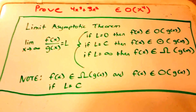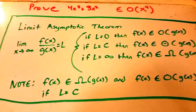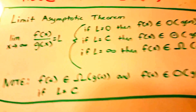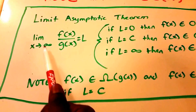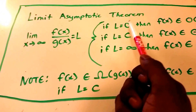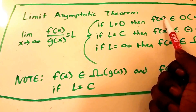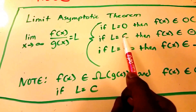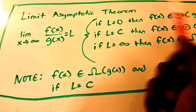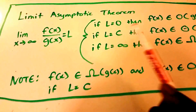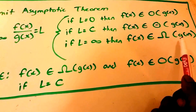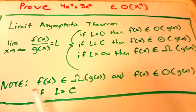Hello YouTube, this is a proof of f(x) belonging to Big O of g(x) using the limit theorem. Here we have the limit as x approaches infinity of f(x) divided by g(x) equals some limit L. If that limit equals 0, then f(x) belongs to Big O of g(x). If that limit equals a constant C, then f(x) belongs to Big Theta of g(x). And if that limit equals infinity, then f(x) belongs to Omega of g(x).